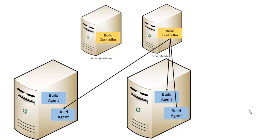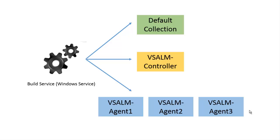So we don't want to slow down our TFS application tier. As we can see, the Build Controller is connected to its agents. We can also have another machine with two Build Agents — one agent connected to one Build Controller and another connected to a different Build Controller on a different machine. For example, the Default Collection Build Services is configured for the Default Collection and has one controller — the Visual Studio TFS controller — with three agents: Agent 1, Agent 2, and Agent 3.